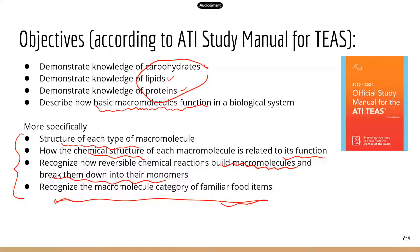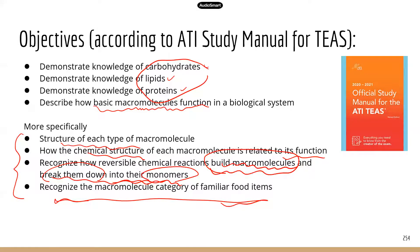Those two kinds of chemical reactions are reversible. One builds from small to large — that's the chemical reaction you use to build big macromolecules. The other type breaks big macromolecules down to smaller molecules, which are the monomers. And lastly, you need to be able to recognize the specific macromolecules in some familiar food items. For example, they may ask you which of the following foods is rich in lipids or carbohydrates.